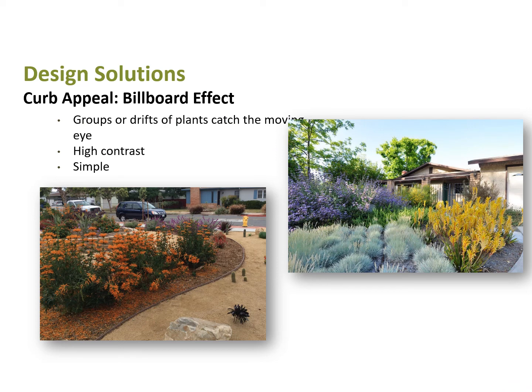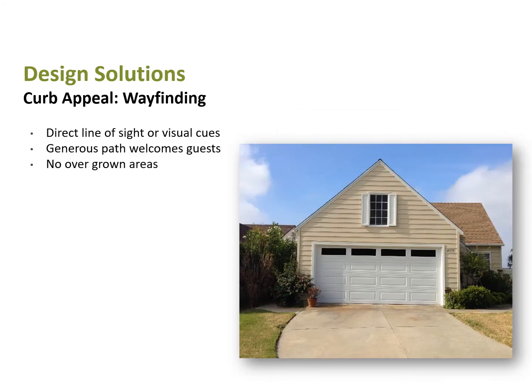Design solutions and challenges: for curb appeal, maybe a client is planning to flip their house and wants attention-getting planting so people will notice it and it sells quickly. We can do that by planting groups and big blocks or drifts of color to catch the eye of people driving by at 25 miles an hour. These tend to be high-contrast, simple designs, which accomplish curb appeal really well.